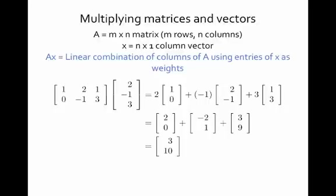The way I perform this multiplication is to form a linear combination of the columns of A. You see the 1, 0 and the 2, negative 1 and the 1, 3 as little 2 by 1 column vectors. The weights I'm going to use to form that linear combination are the entries of the vector X.